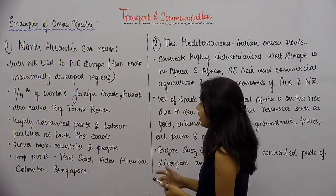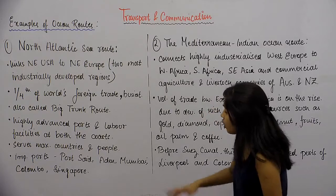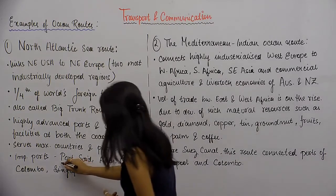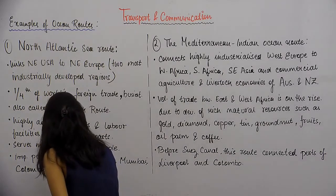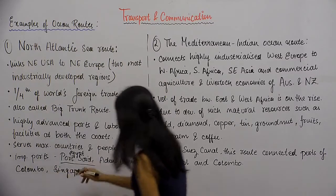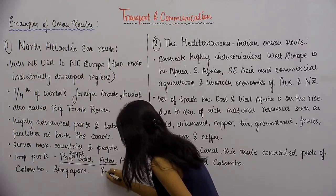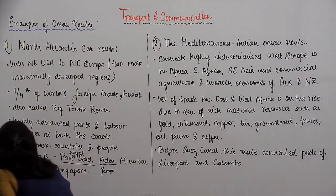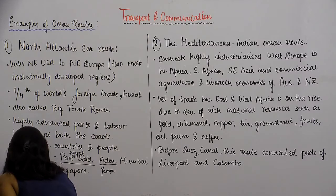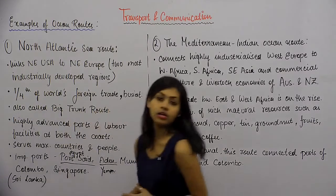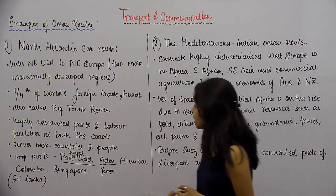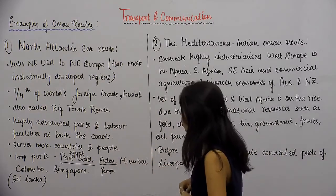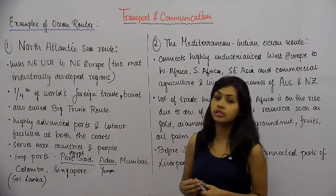The important ports located along this sea route are Port Said, Aden, Mumbai, Colombo, and Singapore. Port Said is in Egypt. Aden is a port of Yemen. Mumbai is in India. Colombo is a very important port in Sri Lanka. And Singapore is an island city-state. These are the important ports along this trading route.